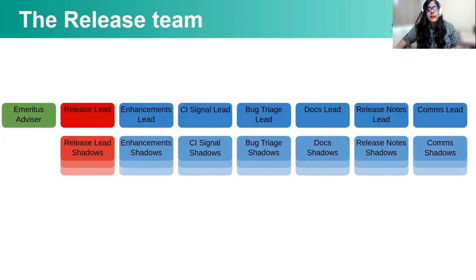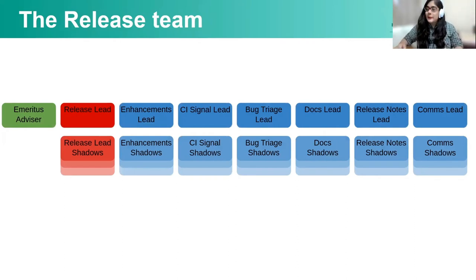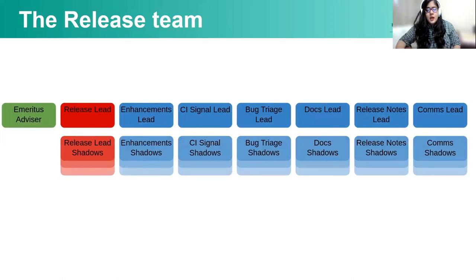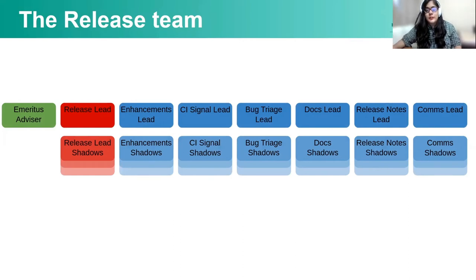Each of these verticals is responsible for delivering the artifacts assigned to their vertical. Because I have led the comms for 1.21, I can speak at length about it. The comms vertical basically deals with the communication aspect of the release — that involves all the webinars or blogs that you see going out after the release. It also deals with the blog that gets released on the release date, and all the coordination with CNCF comes under the comms vertical.